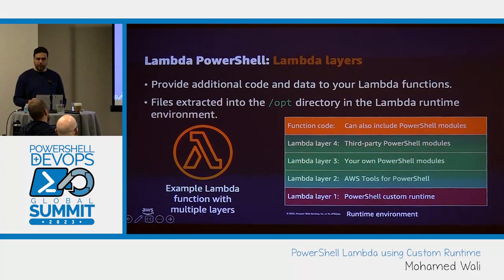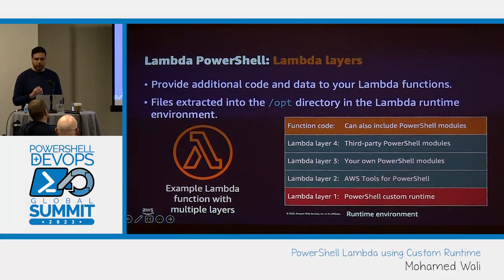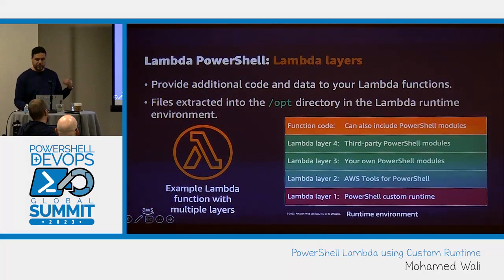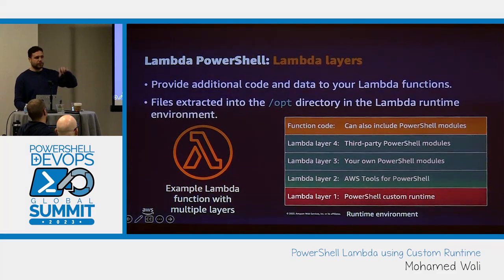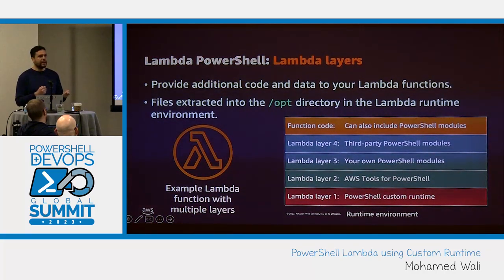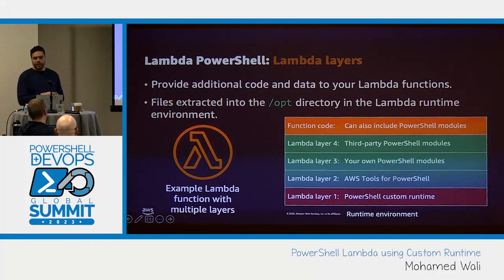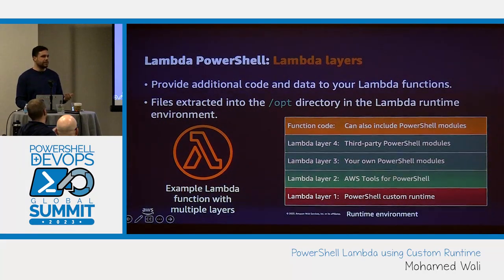Lambda layers provide a convenient way to package libraries and other dependencies you can use with your Lambda functions. By using Lambda layers, you're not only reducing the size of your uploaded deployment archives, but you're also making it faster to deploy and implement your code. The layer itself is a zip file archive that contains additional code and data — a custom runtime, libraries, dependencies, or anything your Lambda execution might need. By using layers, you're promoting code sharing — you don't have to invest time incorporating others' code into your own; just utilize it as a layer, which promotes separating responsibilities and lets you focus on writing your own business logic.